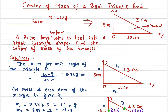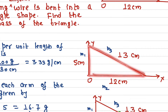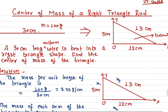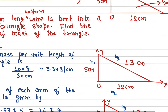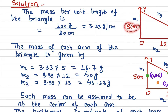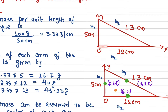Once I know the mass per unit length, I can find the individual mass of each side. One centimeter has 3.33 grams of mass. The wire is bent into a right angle triangle, so we can find the mass of each side. For this side with a length of 5 centimeters, its mass would be 3.33 times 5, which is 16.7 grams.